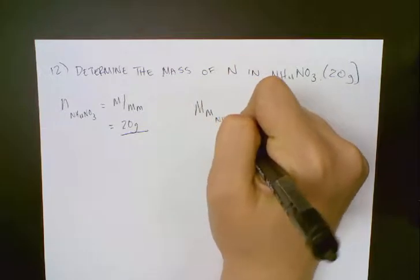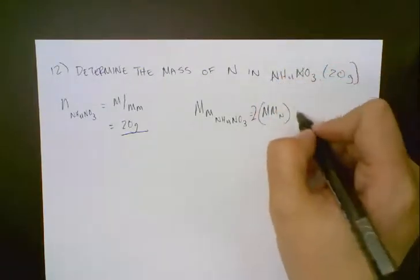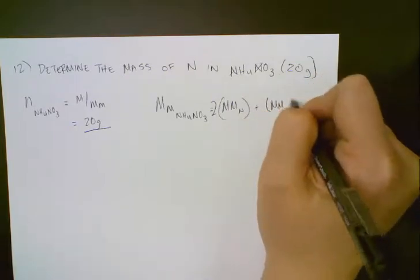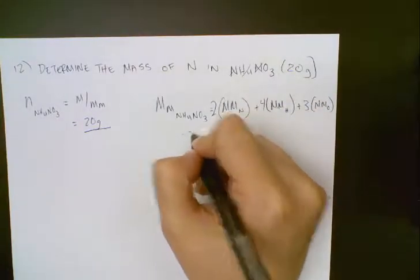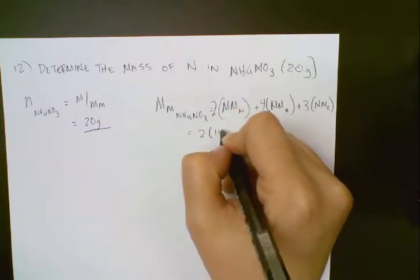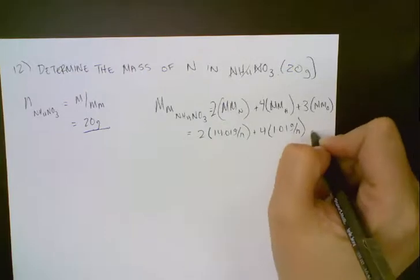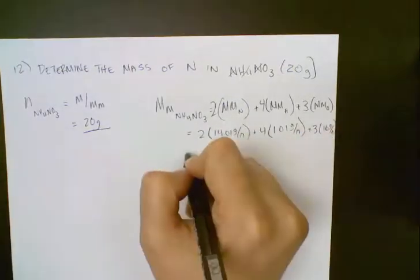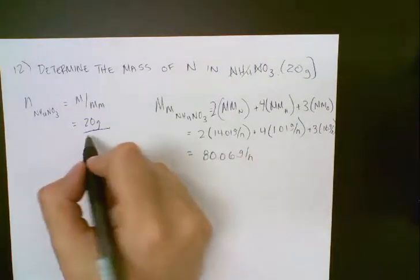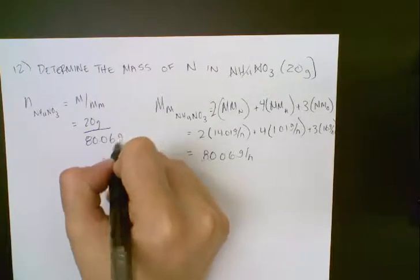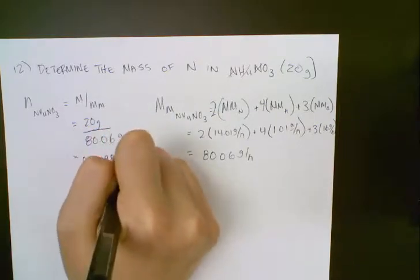The molar mass of ammonium nitrate is going to be the molar mass of nitrogen multiplied by 2 — because we have 1 here and 1 here — plus the molar mass of hydrogen times 4, plus 3 times the molar mass of oxygen. That's 2 × 14.01 g/mol, plus 4 × 1.01 g/mol, plus 3 × 16 g/mol. If we add that all up, you get 80.06 grams per mole. Plugging into our equation — 20 grams divided by 80.06 grams per mole — gives us 0.24981264 moles.